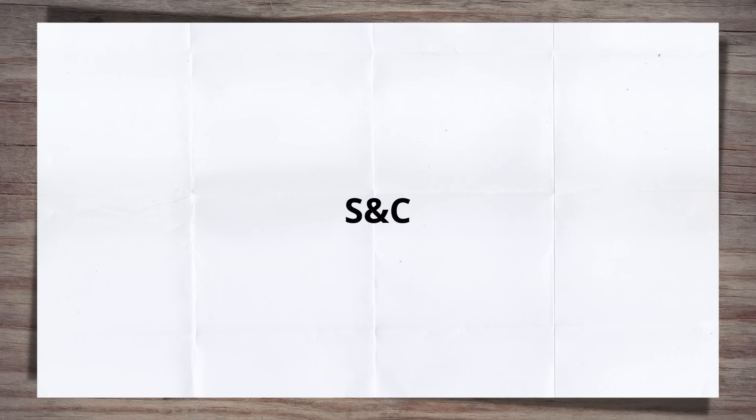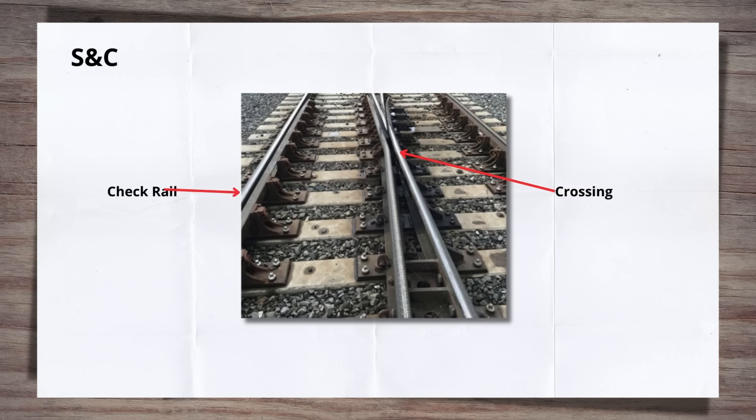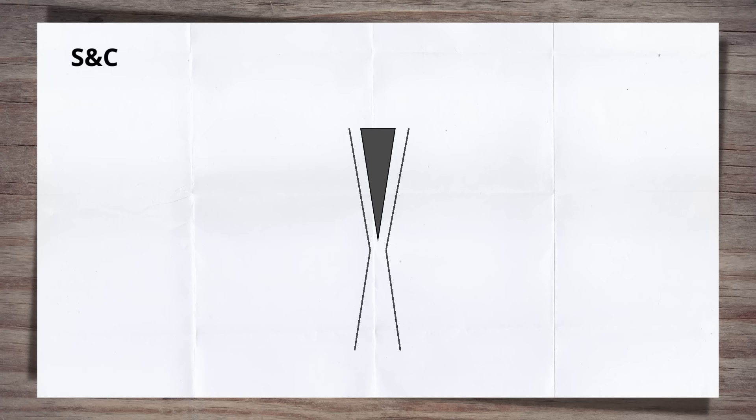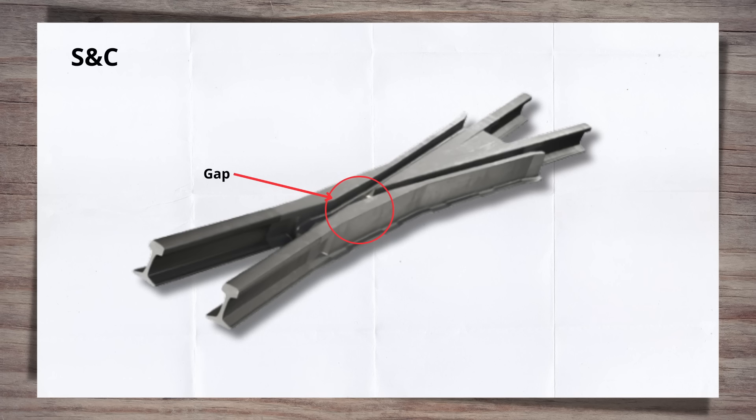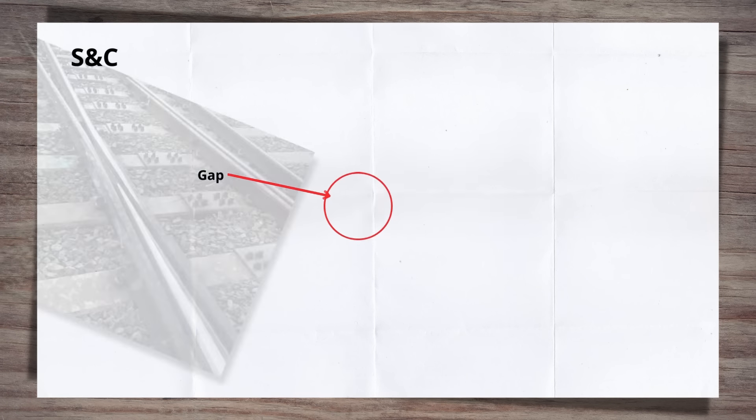Within S&C, checkrails are placed opposite the crossings. The function of the crossing is to allow the train wheel to pass over or through another rail. This allows lines to deviate from or cross over each other, a key function of S&C layouts. To do this, a gap in the rail running surface is needed to allow the flange to pass through. This is found within the centre of the crossing just past the nose.